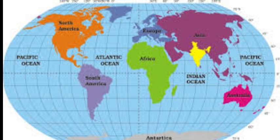Kanyakumari is situated at the confluence of the Bay of Bengal, the Arabian Sea, and the Indian Ocean. It is the place on mainland India nearest to the equator. The duration of day and night are almost equal here, which would not be the case at places in the north that are situated farther from the equator.